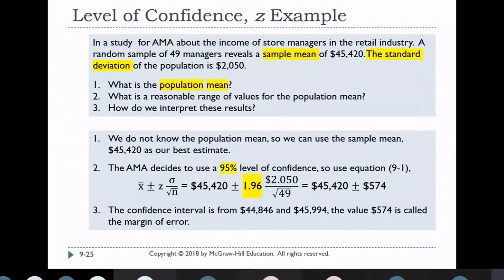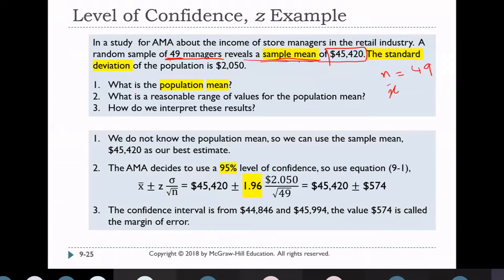Example: In a study by the AMA about the income of store managers in the industry, a random sample of 49 managers reveals a sample mean of $45,420. The sample mean x̄ = $45,420, sample size N = 49.